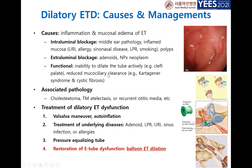Traditionally, the Valsalva maneuver and auto-inflation were easy and simple treatment methods. However, without treating the underlying disease and placing a pressure-equalizing tube, we do not have efficient treatment methods. Recently, balloon tube dilation has been introduced for restoration of eustachian tube dysfunction, and its efficacy is now well proved.